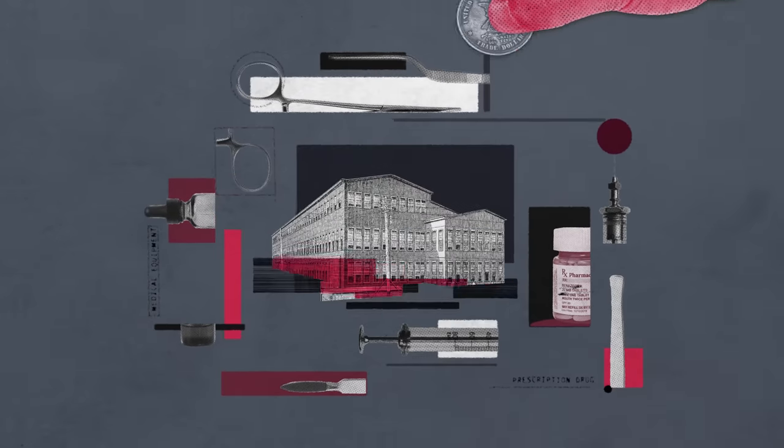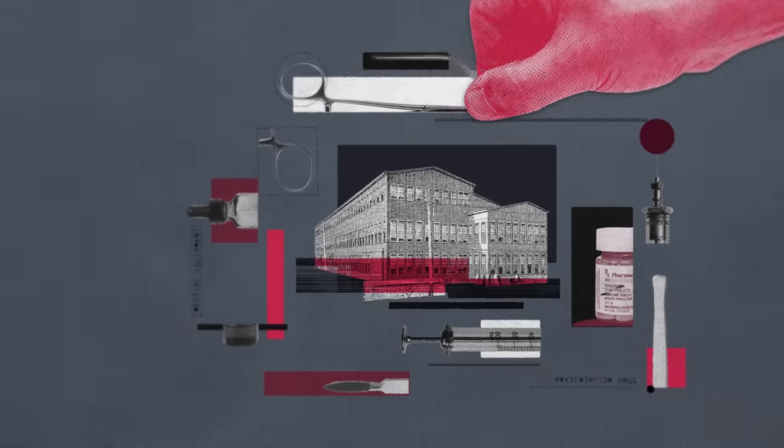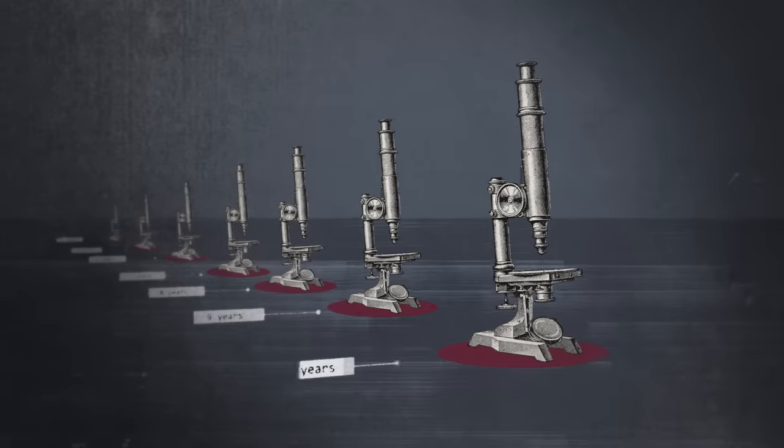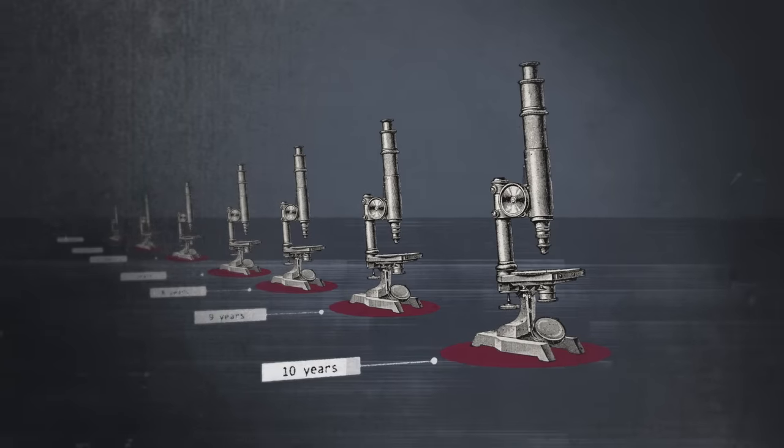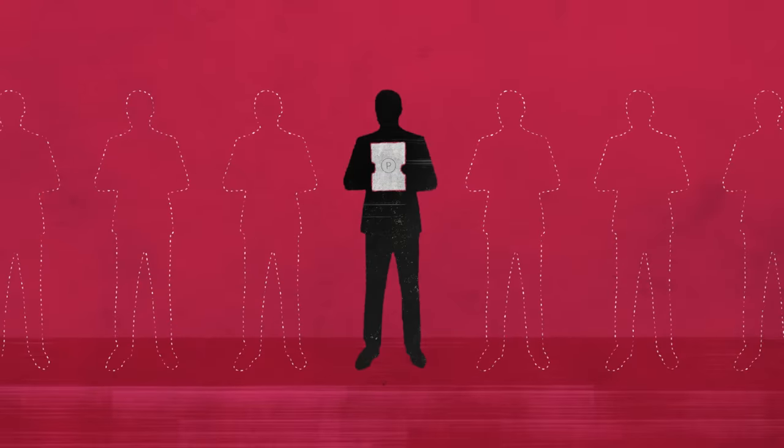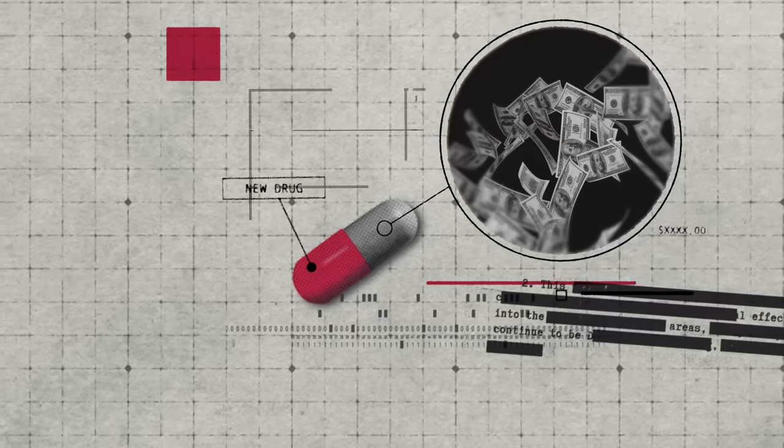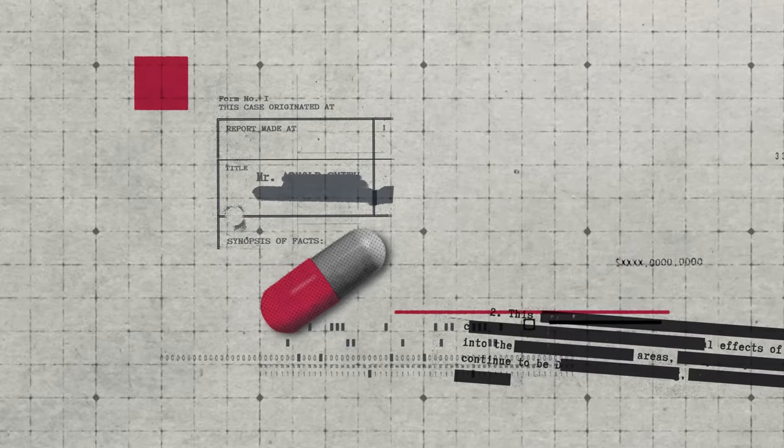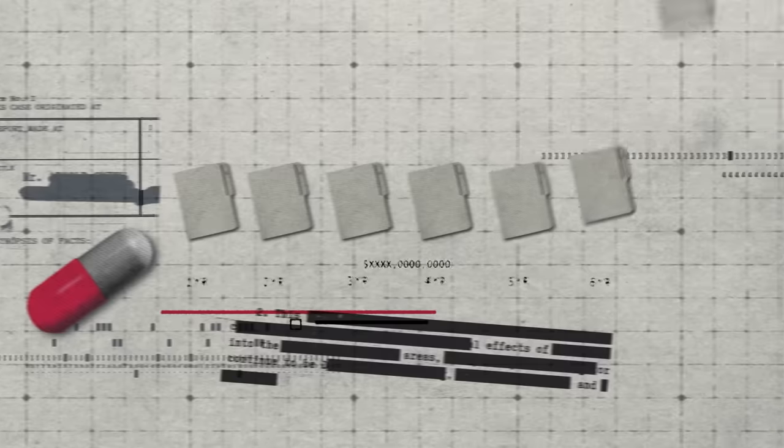The idea is that the government grants these monopolies so that companies and individuals will invest the amount of money and time needed to innovate, and they'll be able to recover their cost by having a monopoly for a period of time. It is expensive to innovate, to develop a new drug. It requires a lot of research, often many years, sometimes several decades.